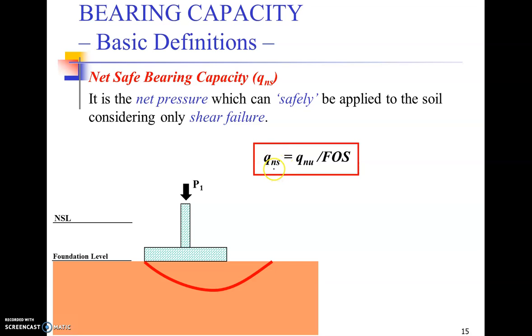That is called net safe bearing capacity. Factor of safety in geotechnical engineering practices generally between two to three. However, based on the experience and based on your understanding of the different parameters at the site, you can decide a more rational factor of safety.